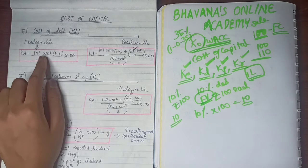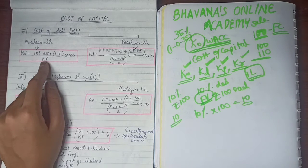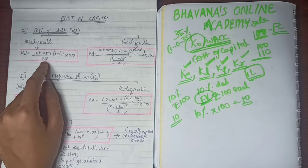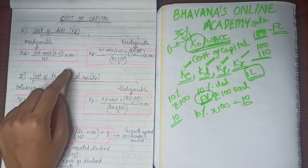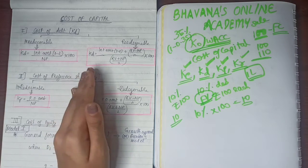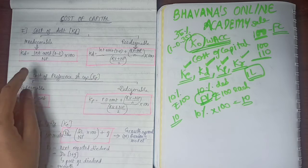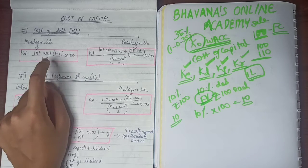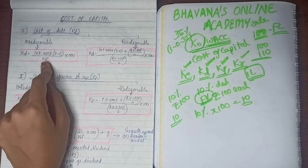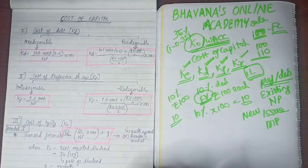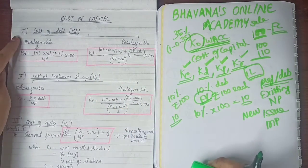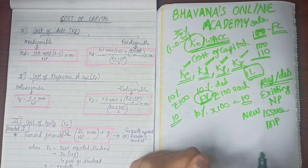Also note that in the denominator, rather than always taking net proceeds, sometimes you will need to take market value instead. So this is how you calculate your KD and KP.